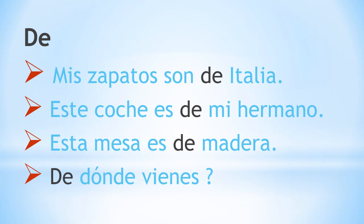Secondly, de is used to show possession for the things you own, and when you indicate the material of something. Por ejemplo, este coche es de mi hermano. This car belongs to my brother. Esta mesa es de madera. This table is of wood.